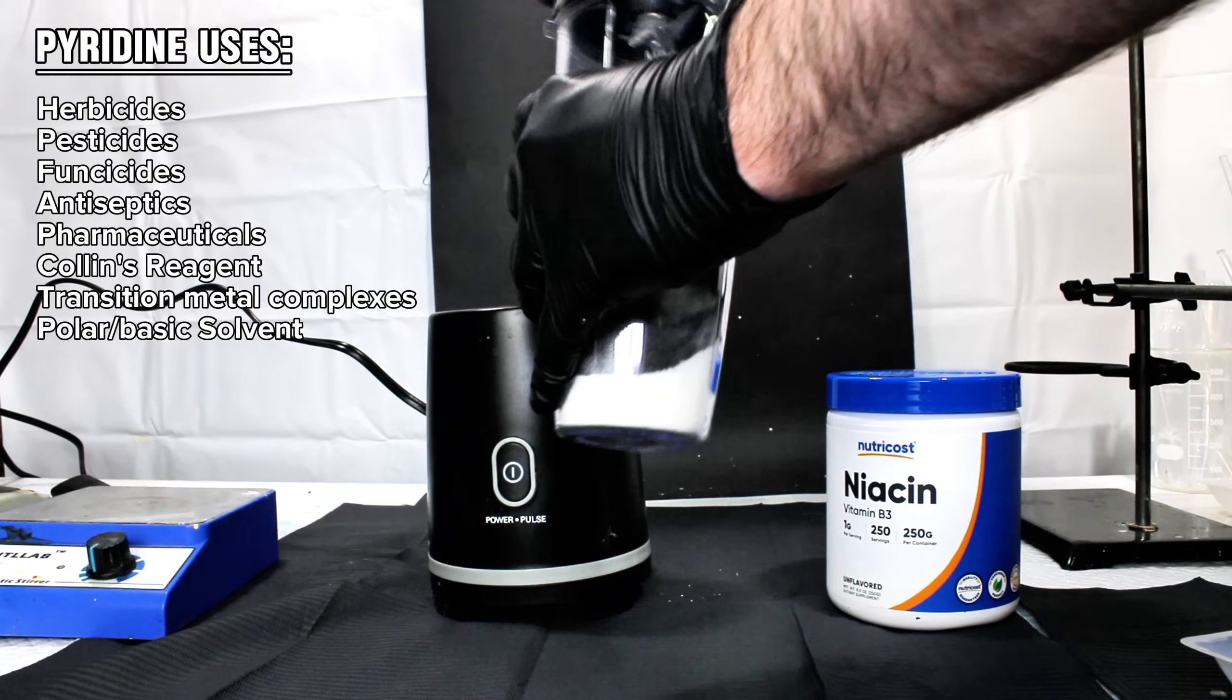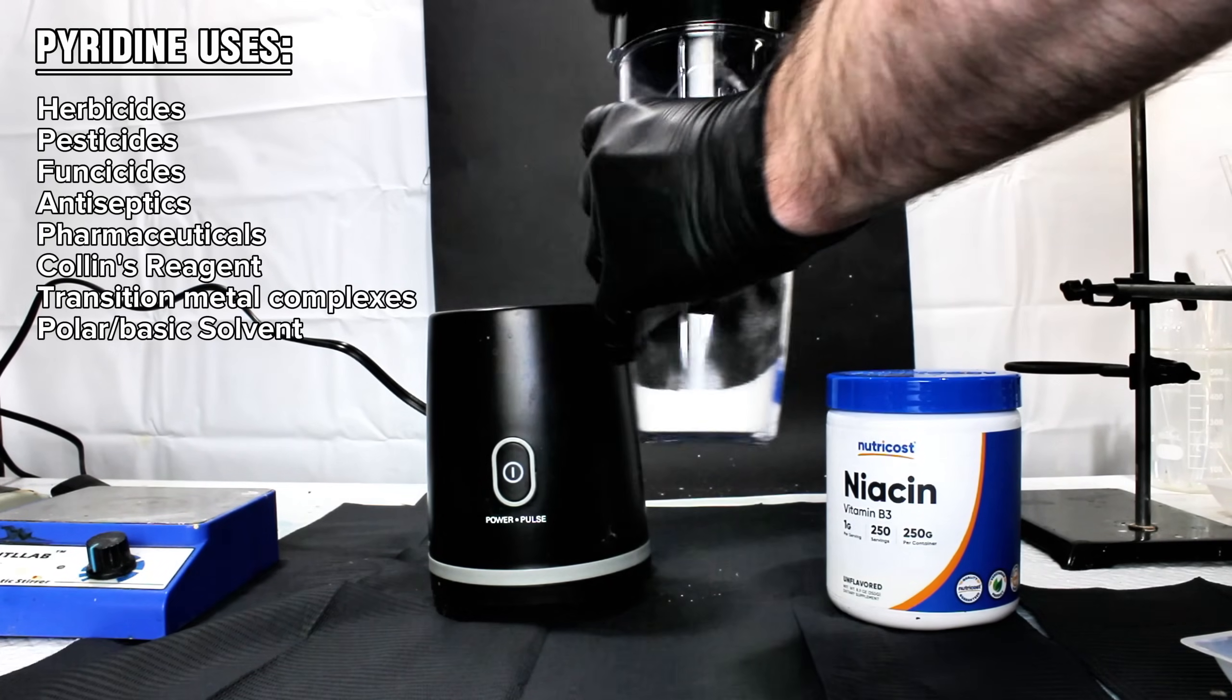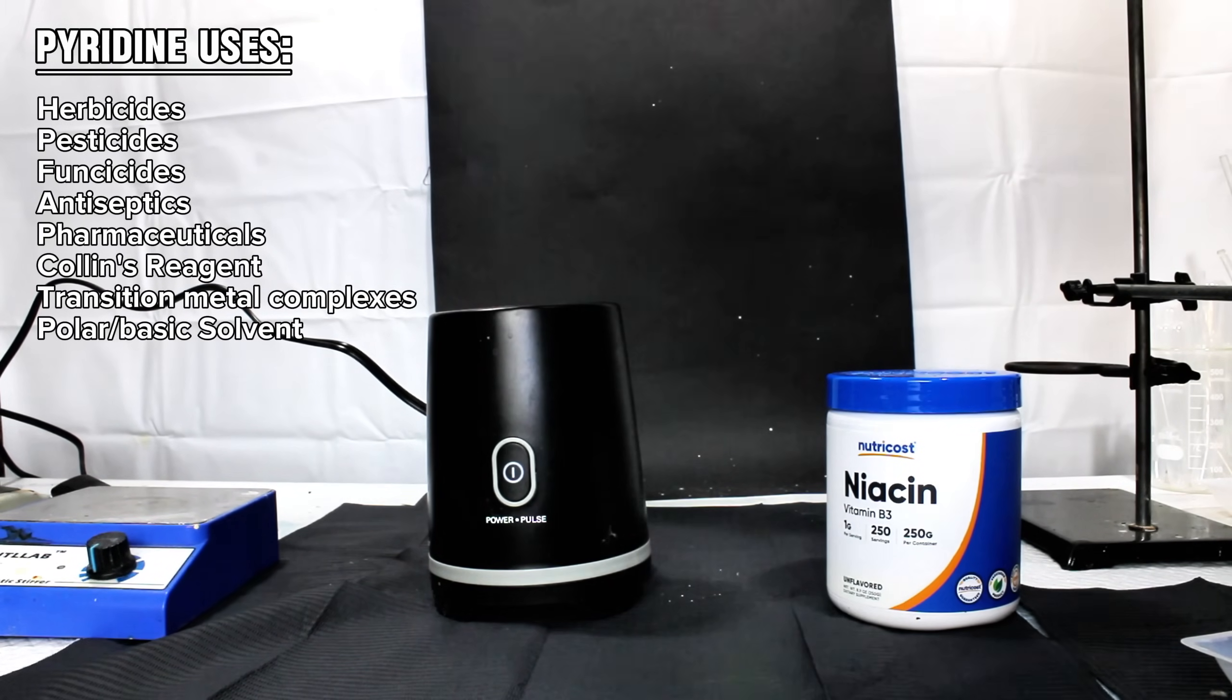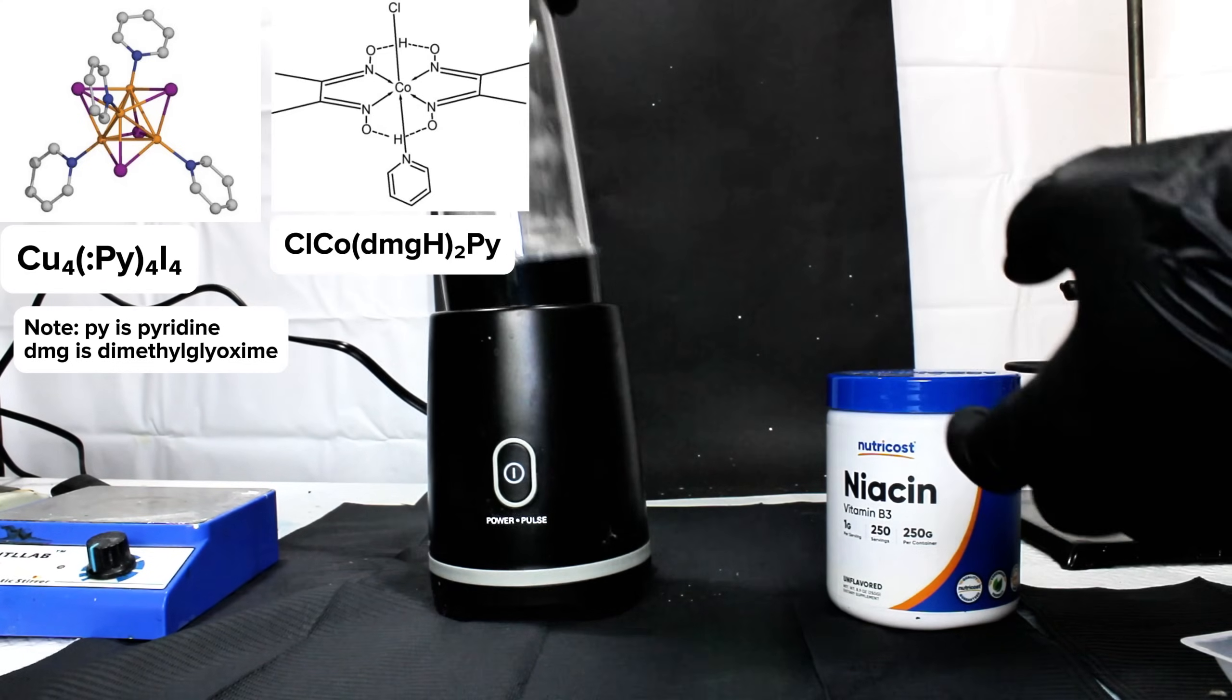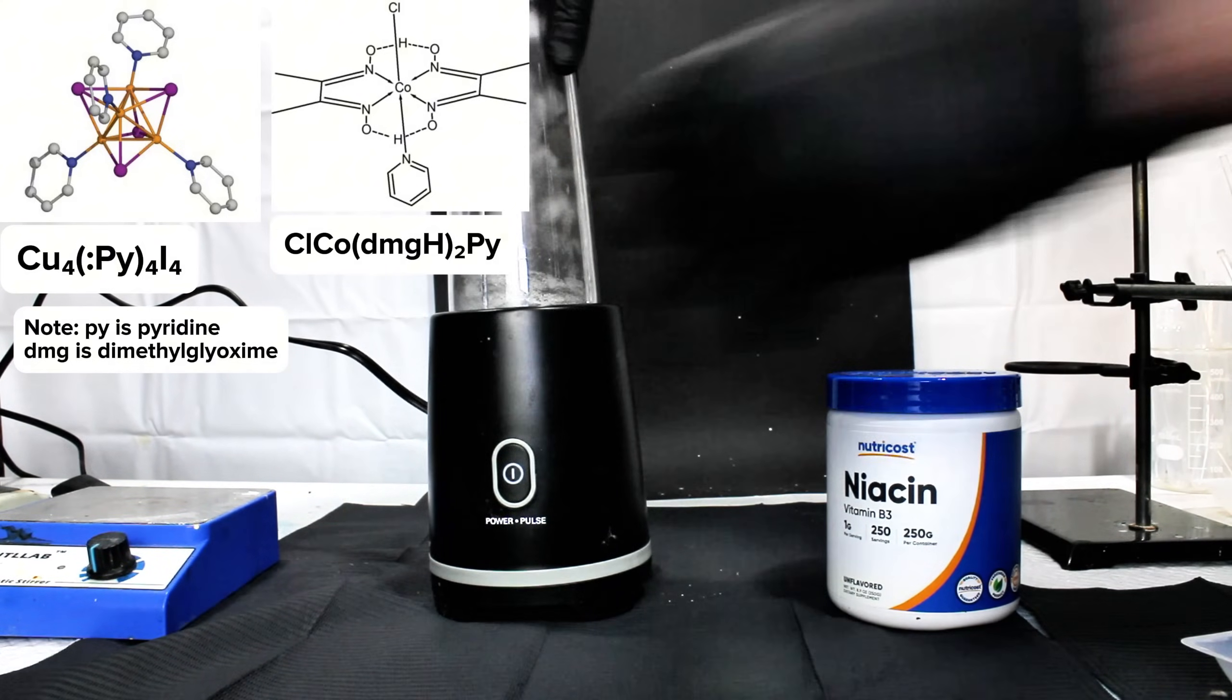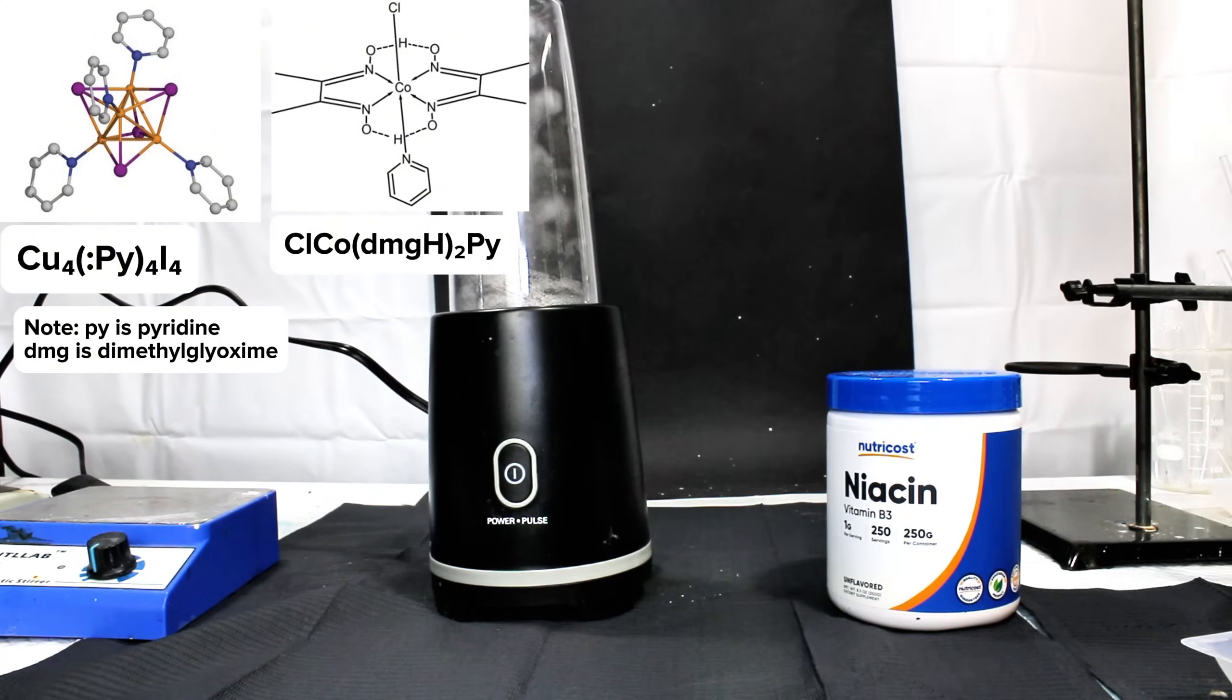Pyridine can also be used to produce a few interesting organometallic complexes, including a fluorescent complex with monovalent copper and an octahedral complex with trivalent cobalt. I plan to use pyridine to make both of these chemicals along with a few others.